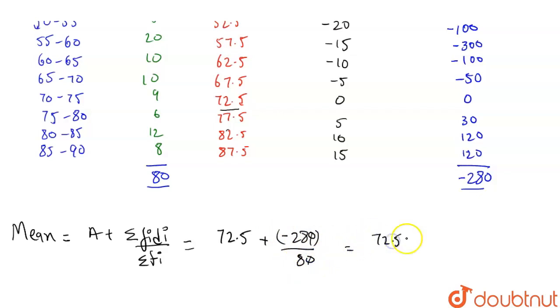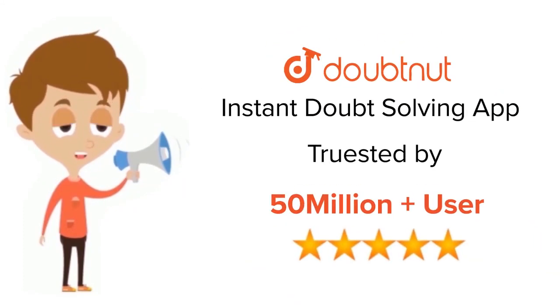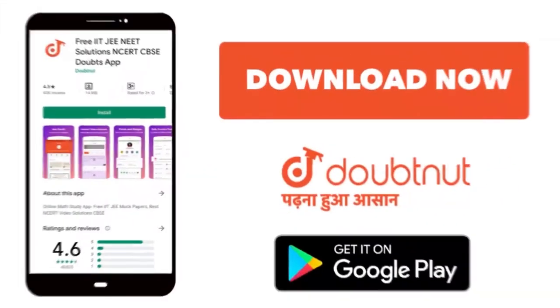Which equals 69. This is our mean. For class 6 to 12, IIT-JEE and NEET level, trusted by more than 5 crore students. Download Doubtnet app today.